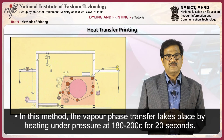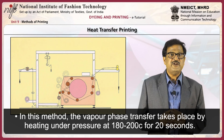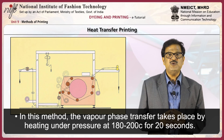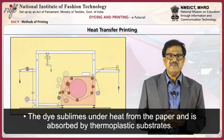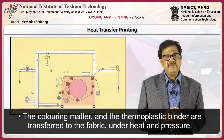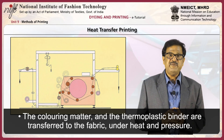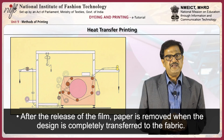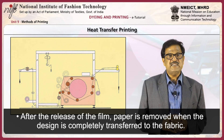Next, we will discuss heat transfer printing. Working principle: In this method, the vapour-phase transfer takes place by heating under pressure at 180 to 200 degrees centigrade for 20 seconds. The dye sublimes under heat from the paper and is absorbed by thermoplastic substrates. The colouring matter and thermoplastic binders are transferred to the fabric under heat and pressure. After the release of the film, the paper is removed when the design is completely transferred to the fabric.